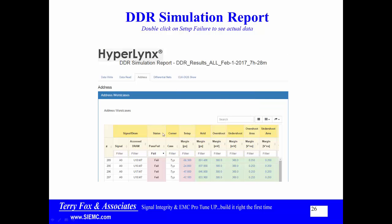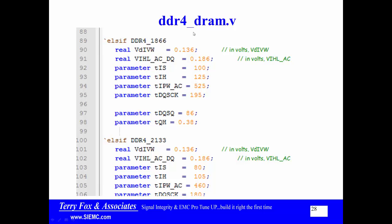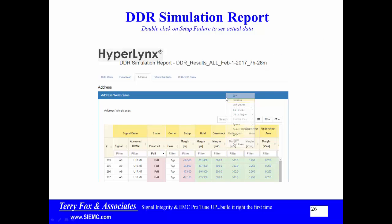Going back to the previous view, the failure was in the setup time — it showed only 56.3 picoseconds of setup time. Looking at the controller and DRAM rules, the setup time for 1866 should have been 100 picoseconds, as defined in the DDR4 DRAM file. These are JEDEC standard timings, and it says setup time should have been 100 picoseconds. With only 56, that's not making it — that's how the failure ties together.